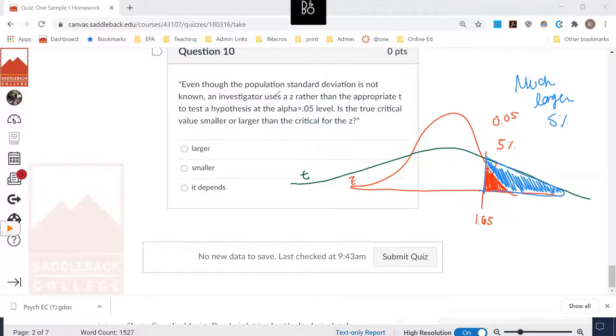So even though the population standard deviation is not known and they use the z, which is red, rather than the t, which is green, is the true critical value smaller or larger? So remember, if you use the z, your critical value was 1.65.